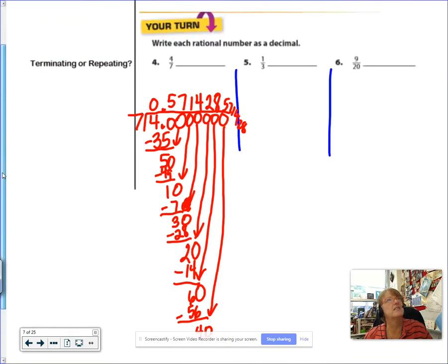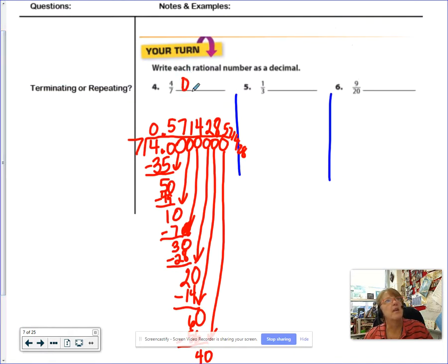Look at this. So, what I want you to write by number 4. 0.571428. Put a line over all of those. Holy mackerel. That repeats in a big six-digit chunk, all right?